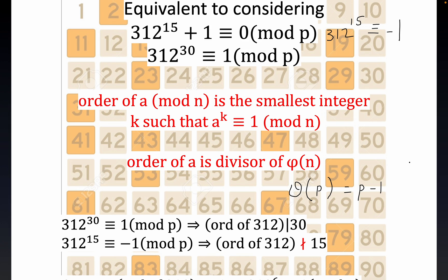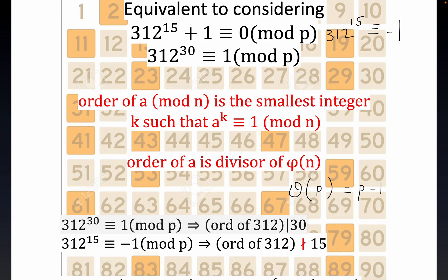Because the order of an element divides phi(p), and phi(p) = p − 1, combined with our earlier statement that 312 to the 30th ≡ 1 mod p, the order of 312 must divide 30. Let's list the divisors of 30: 2, 3, 5, 6, 10, 15, and 30.